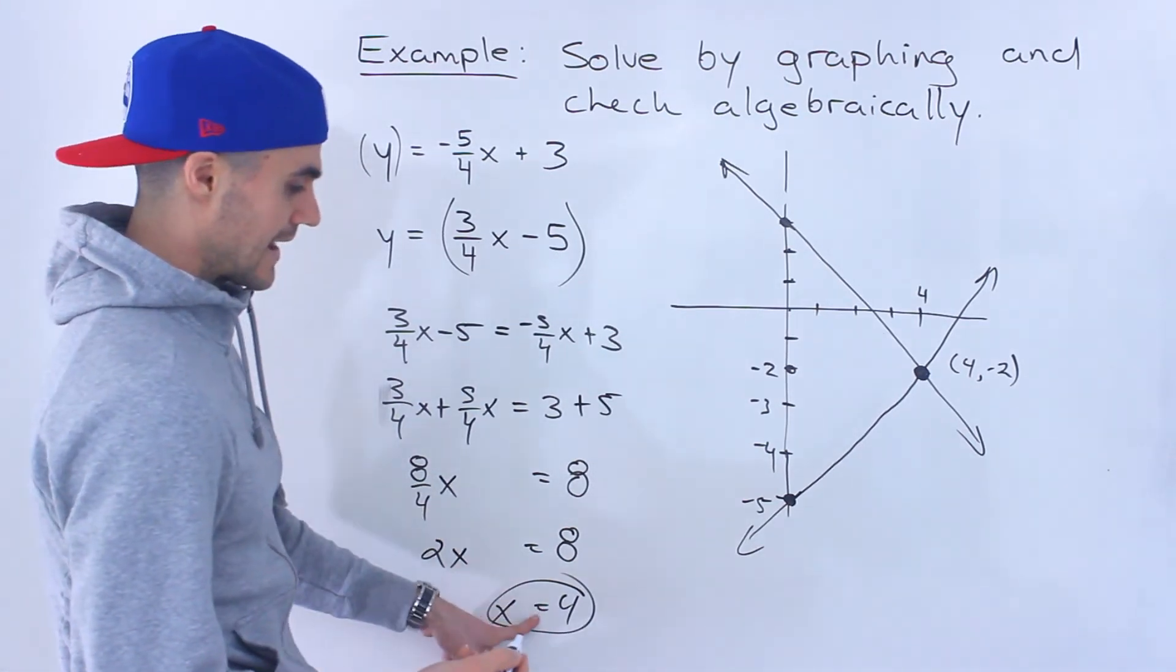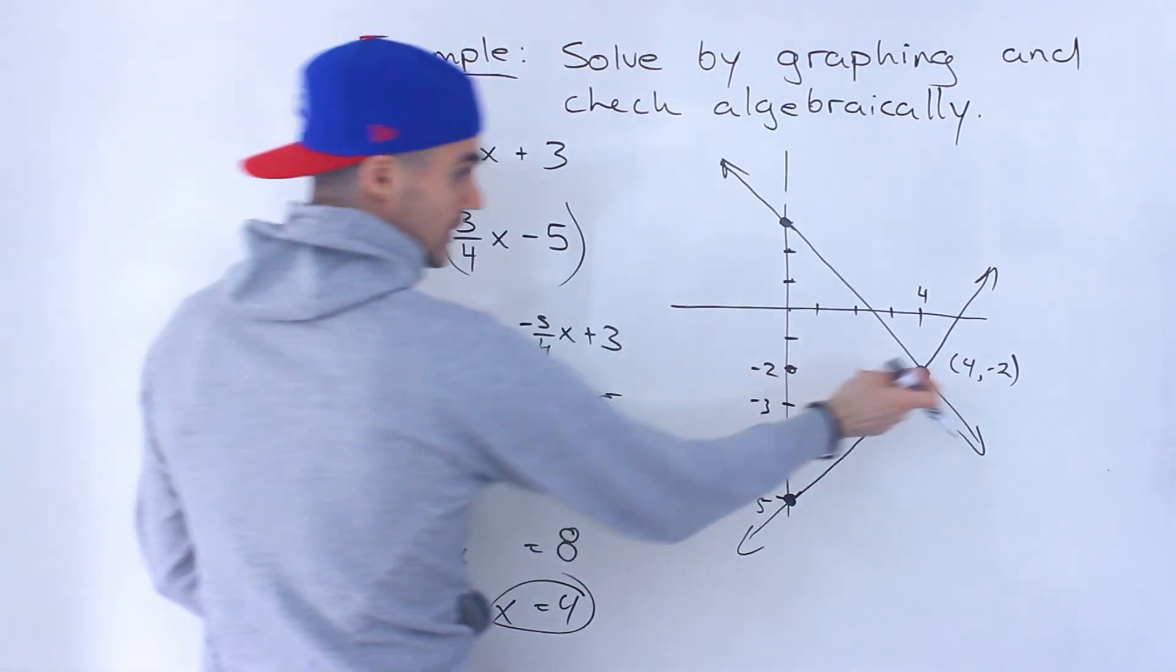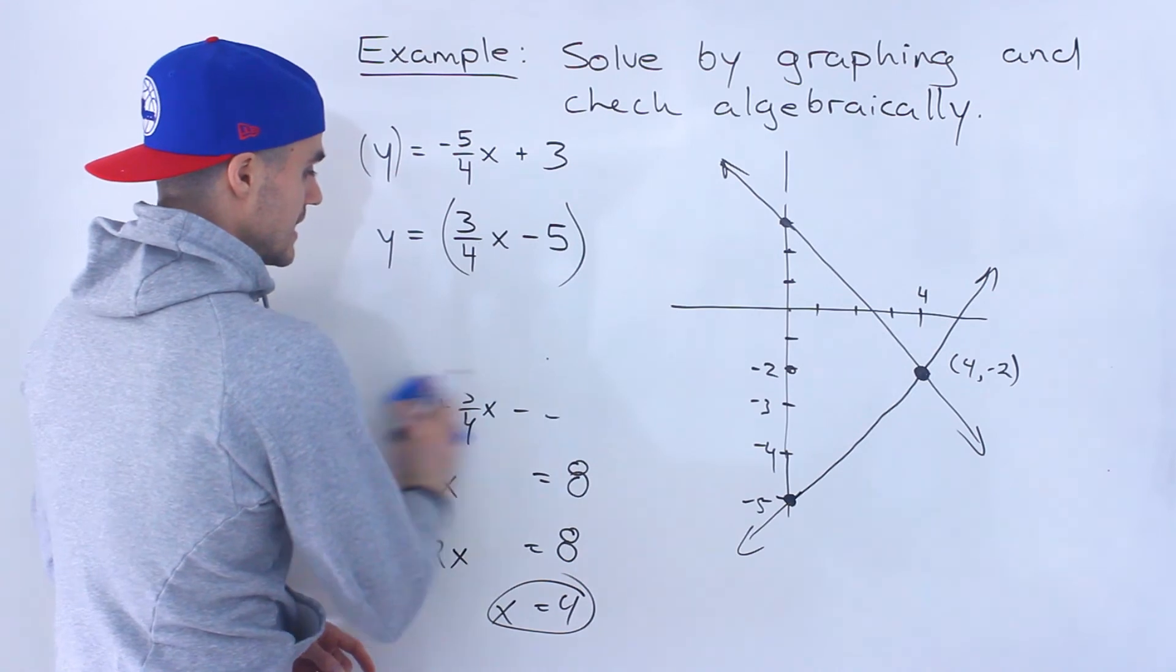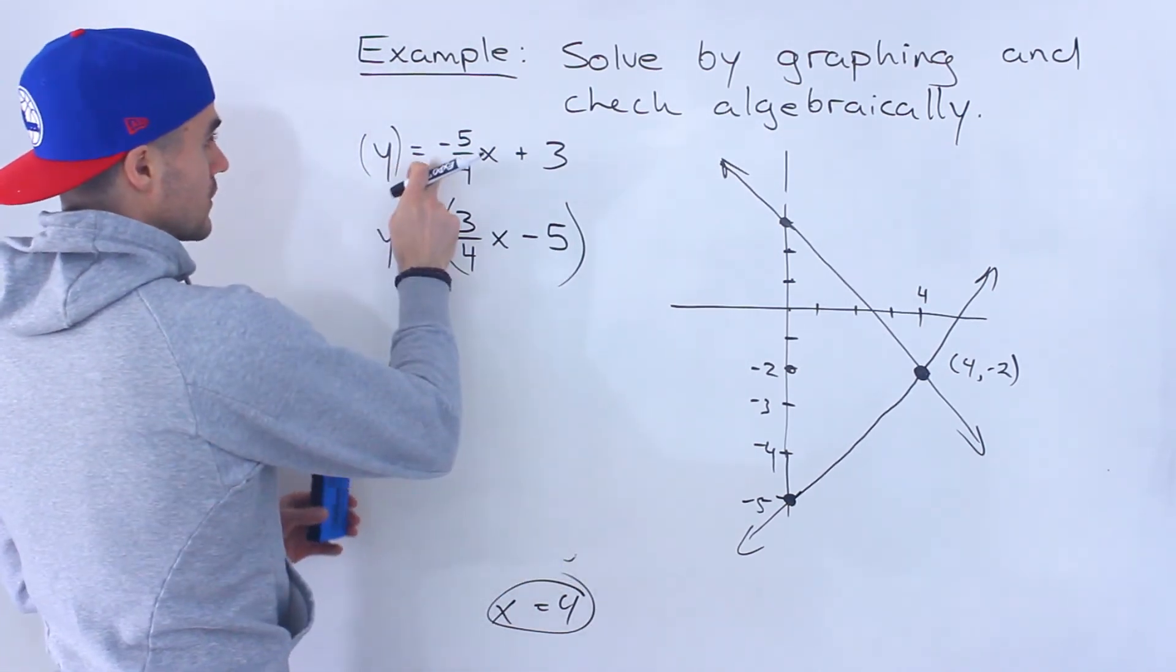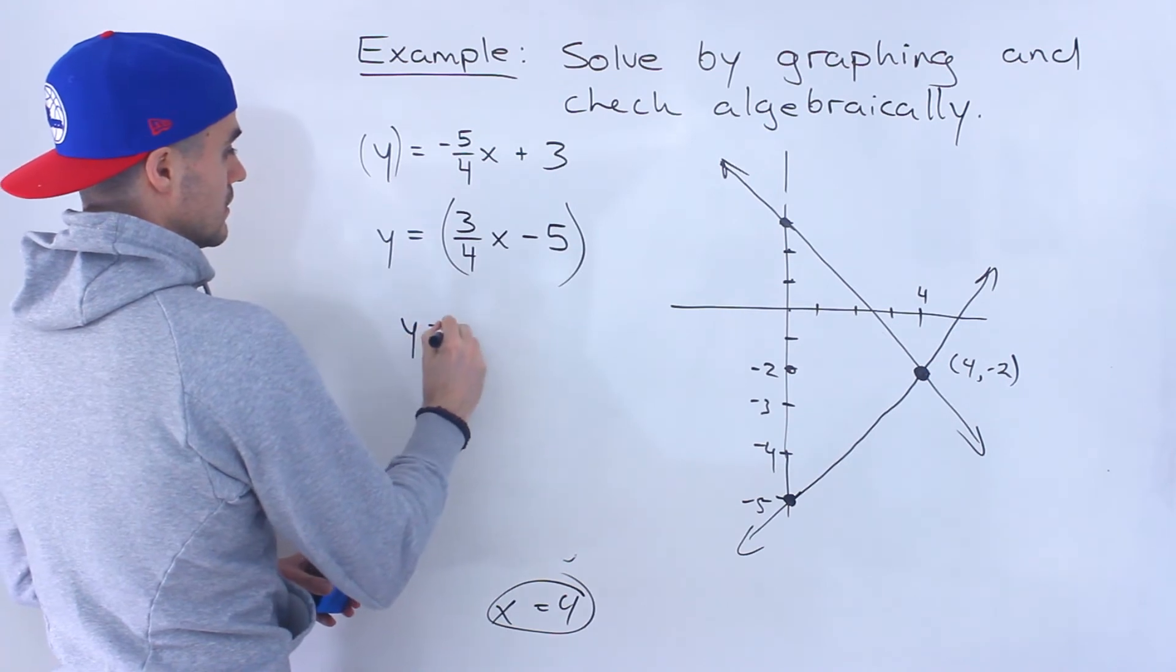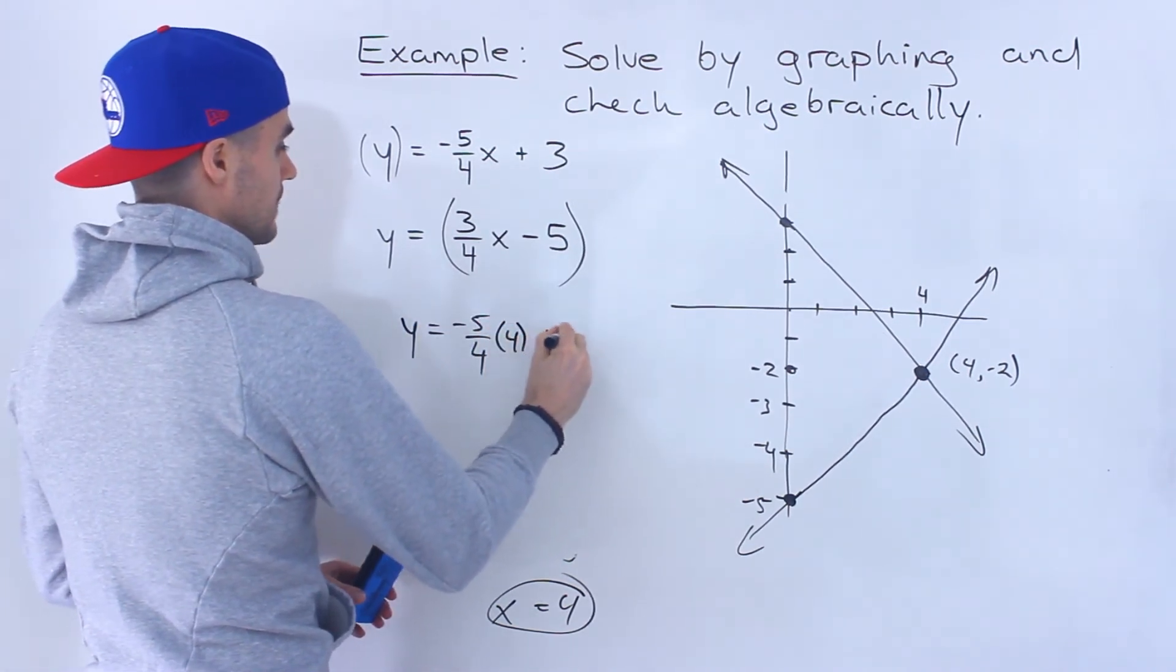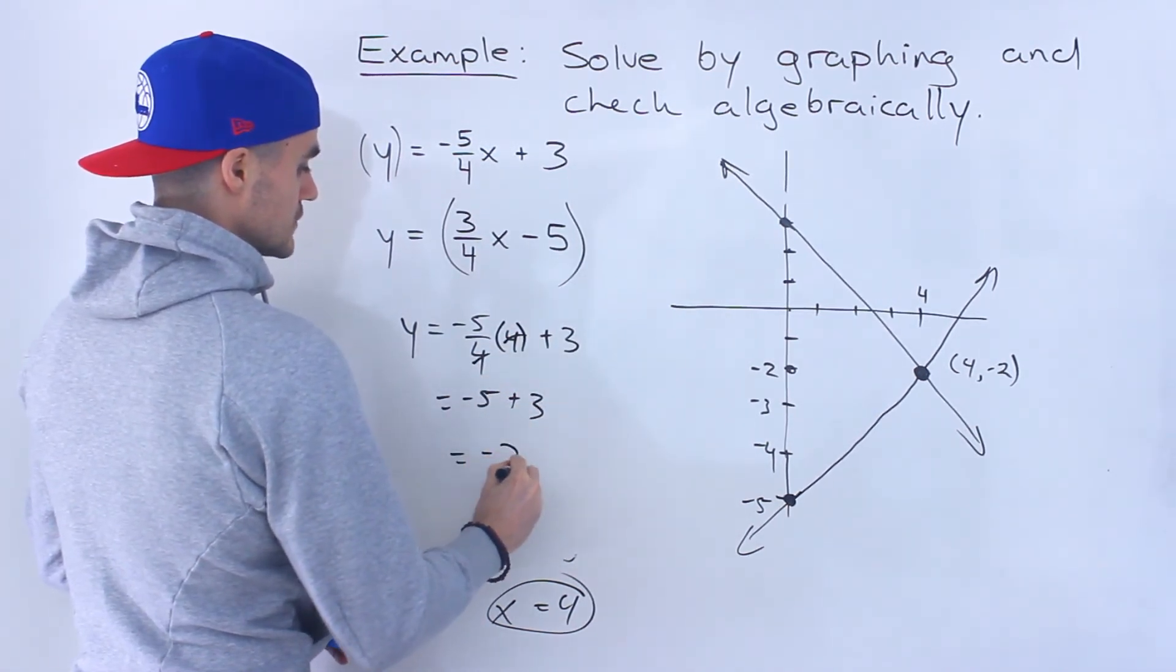And then I could take that x value of 4, plug it into either one of these, and we should get that corresponding y value of negative 2. Notice that we would. So if I take an x value of 4, plug it into the first line, notice the 4s would cancel out. We'd end up with negative 5 plus 3, which would give us negative 2.